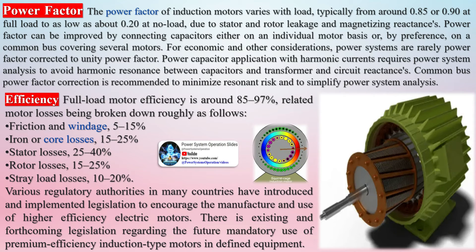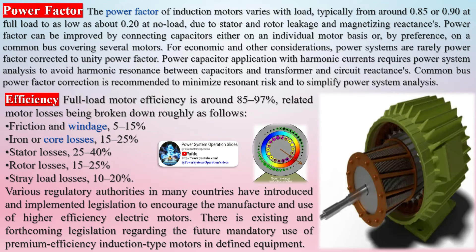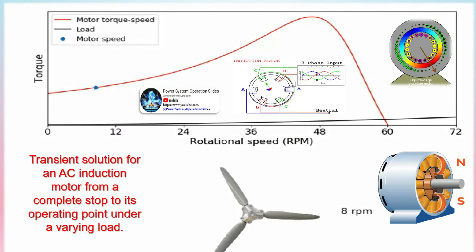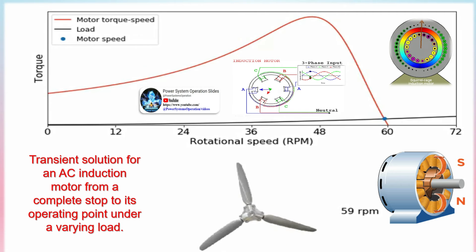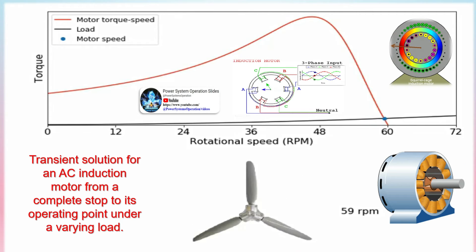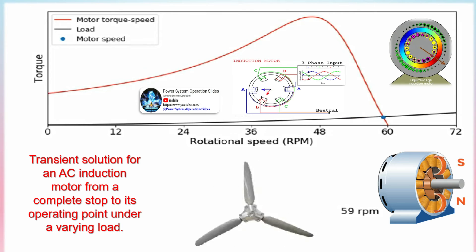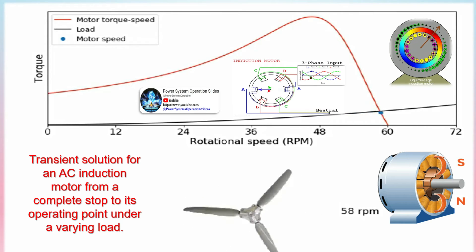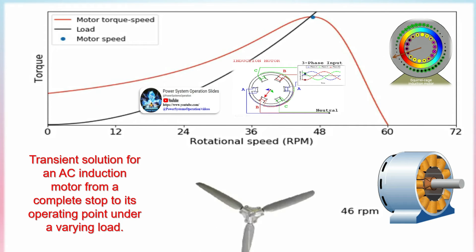The power factor of induction motors varies with load, typically from around 0.85 to 0.90 at full load to as low as about 0.20 at no load, due to stator and rotor leakage and magnetizing reactances. Power factor can be improved by connecting capacitors either on an individual motor basis or, by preference, on a common bus covering several motors. Power systems are rarely power factor corrected to unity. Power capacitor application with harmonic currents requires power system analysis to avoid harmonic resonance between capacitors and transformer and circuit reactances. Common bus power factor correction is recommended to minimize resonant risk.